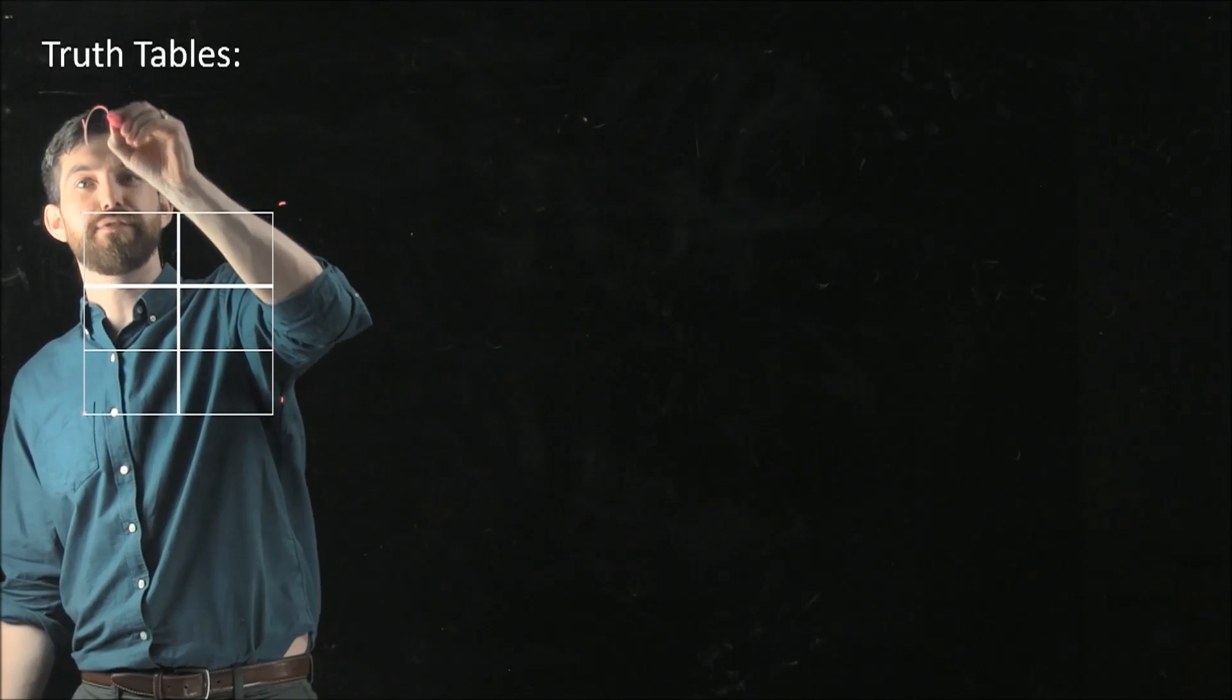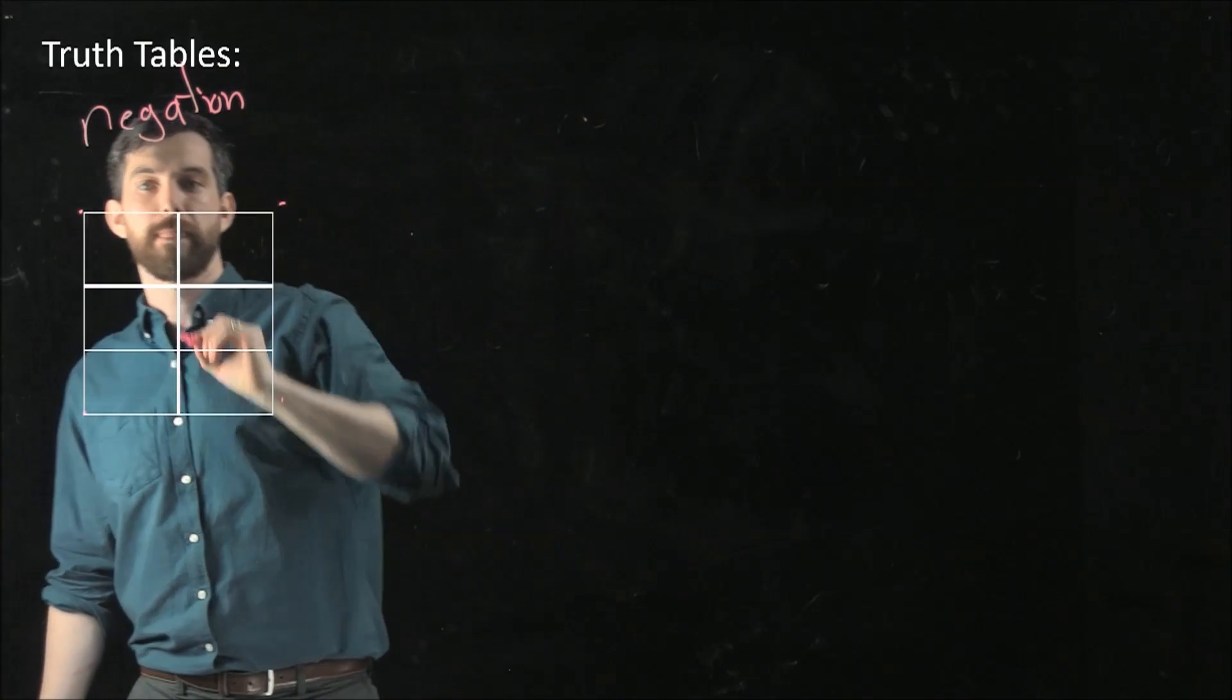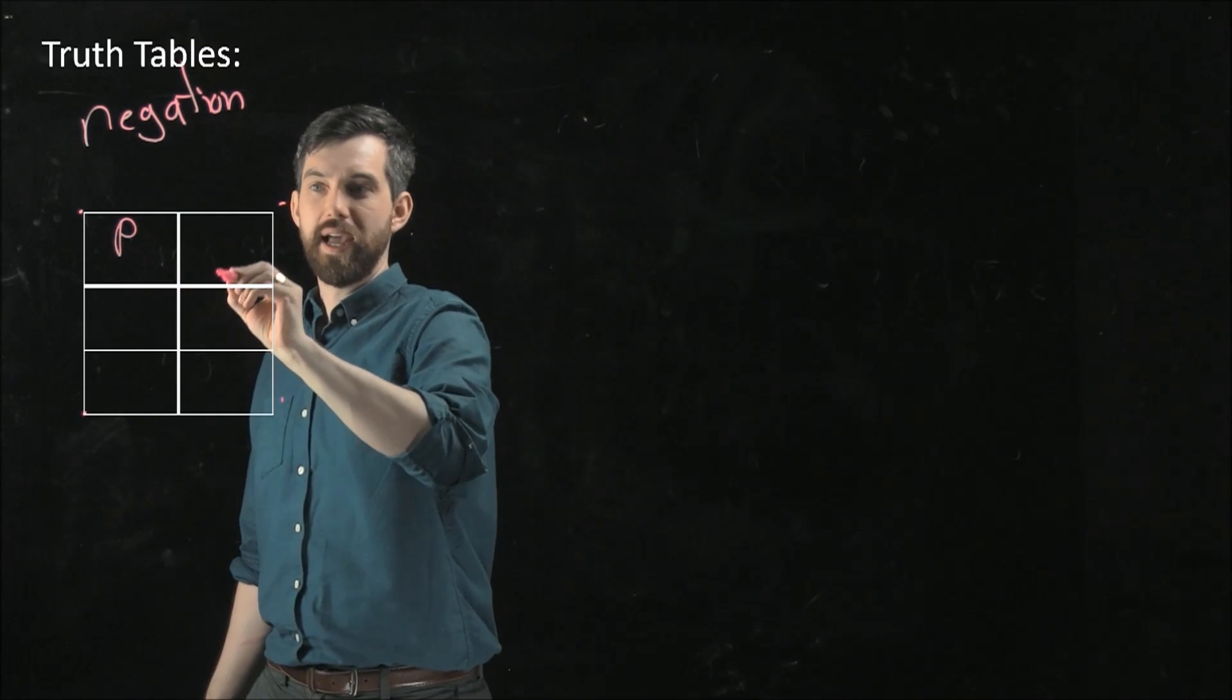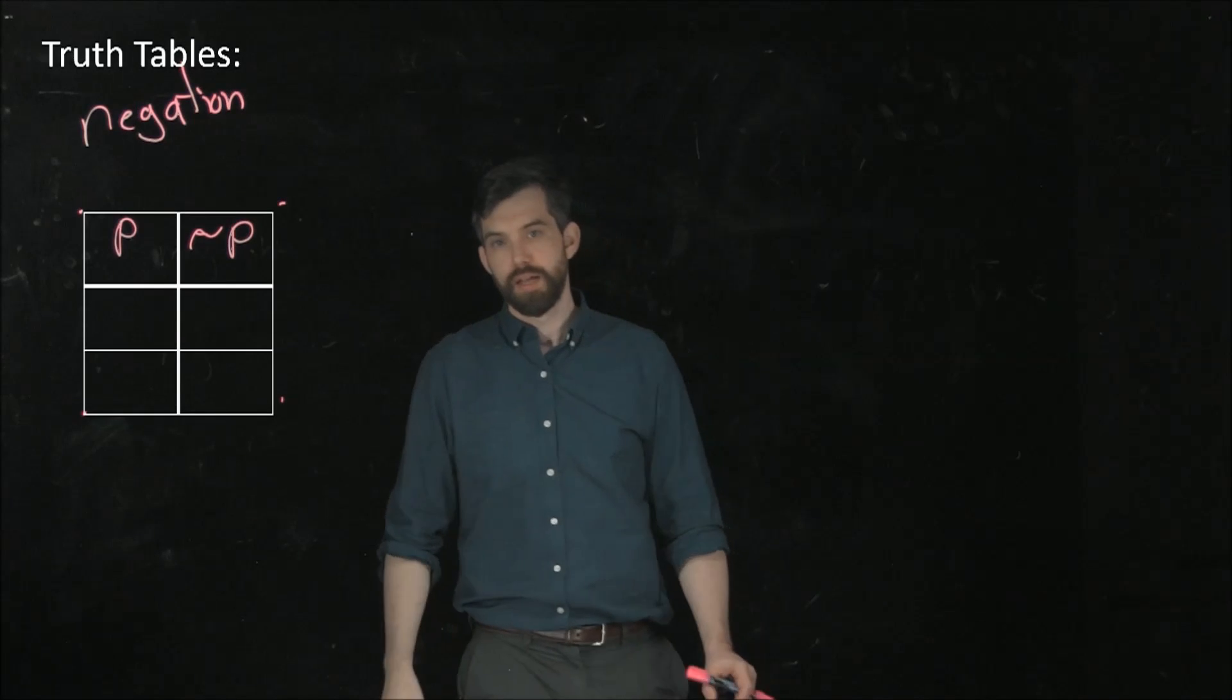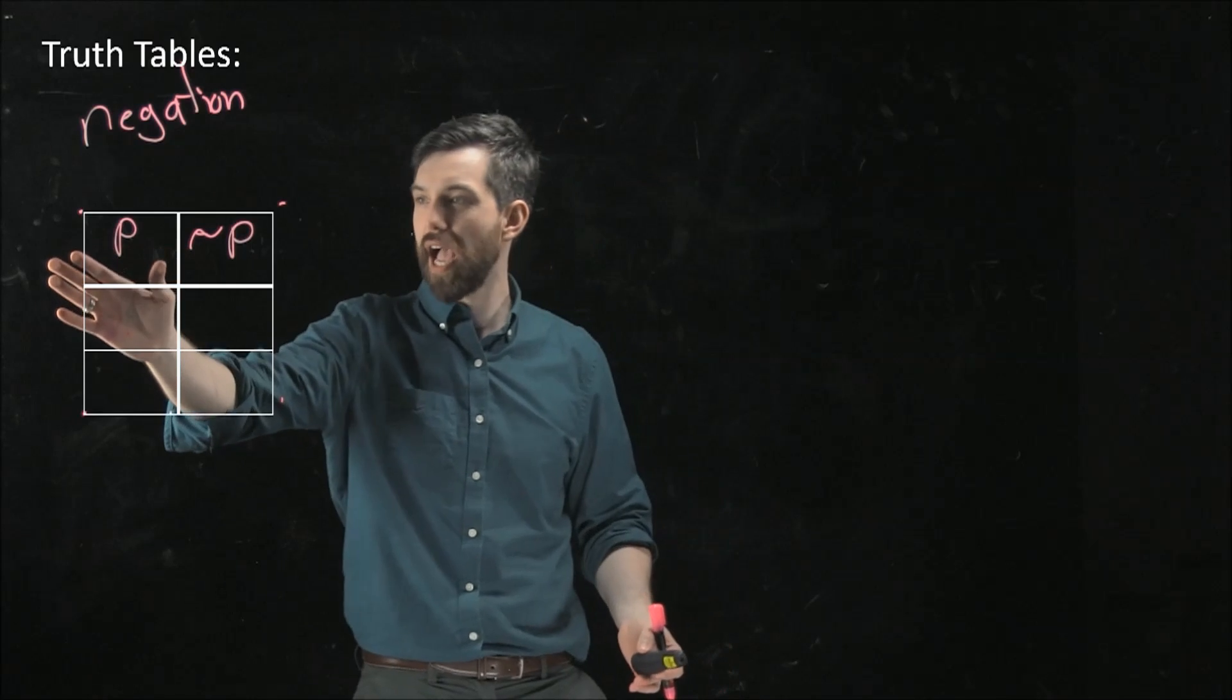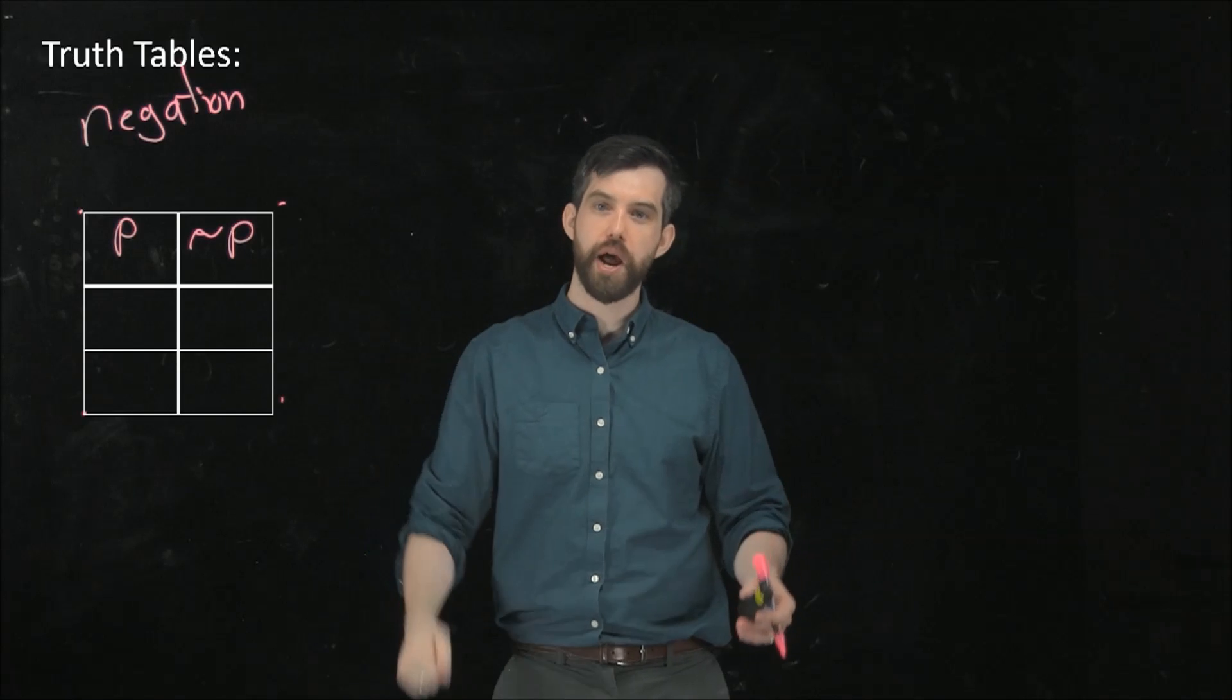For instance, the first I'm going to do is a table for negation. And in this statement, I'm going to put a statement p and a statement not p. So the way a truth table works is that on the left-hand side here, I'm going to put my variable p. p might be either true or false.